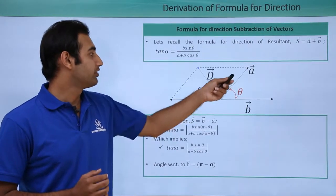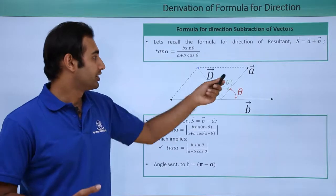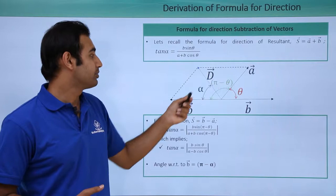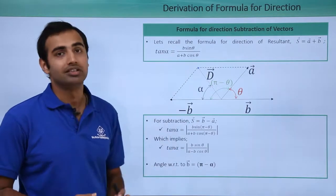All that changes is the angle between the two vectors, right? Because initially the angle between a and b was θ. So we got this formula. Now the angle between a and minus b is π - θ. So we get this formula.